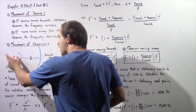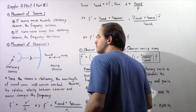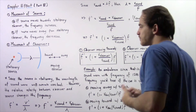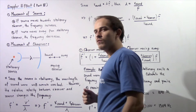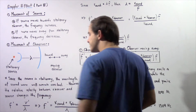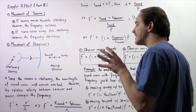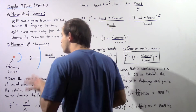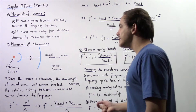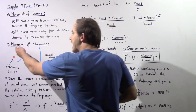Let's suppose we have the source creating the sound wave and it's stationary, creating sound waves that propagate outward in all possible directions. The observer is allowed to move either away from or toward the stationary source. Because the source is stationary, the wavelength of the sound waves produced will remain constant. However, there will still be a change in frequency because there is relative motion between the observer and the sound waves.